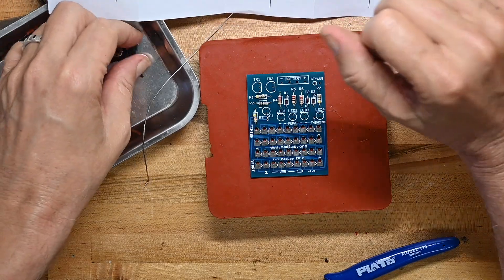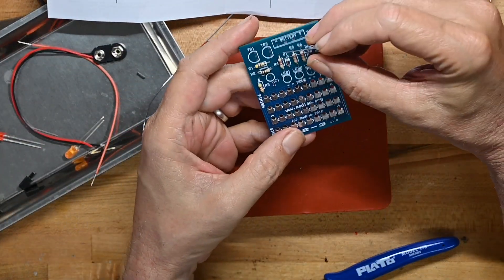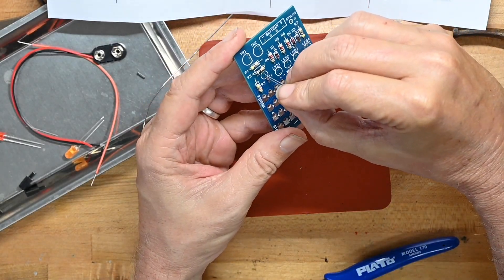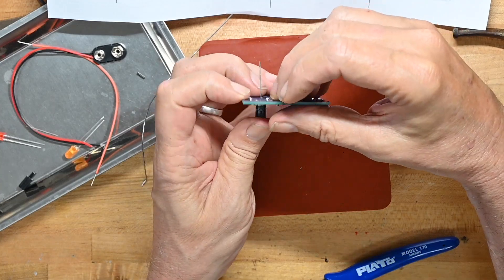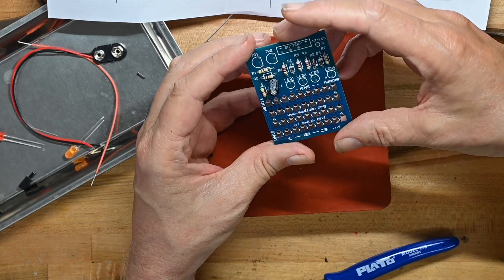Now we'll put the capacitor in and it goes here in C1. And as we can see, it's got a negative marker, not a positive marker as many capacitor layout software does.